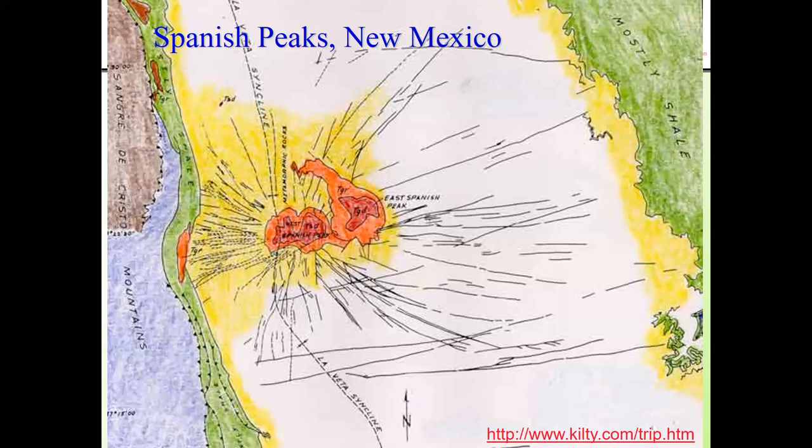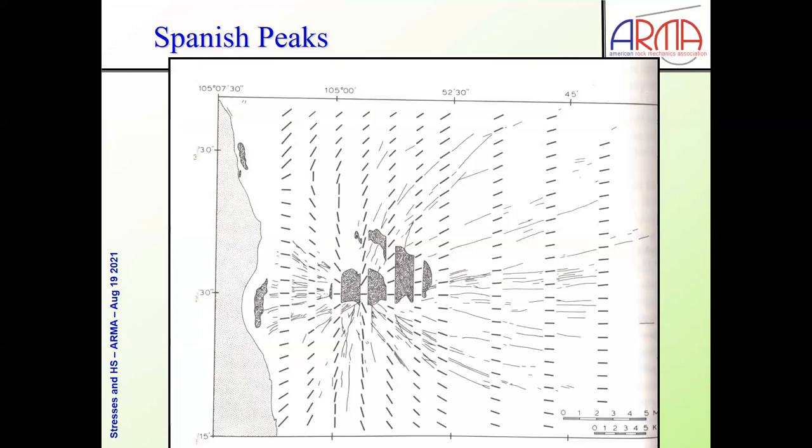The deep fractures were vertical. The shallow fractures were horizontal, or sills. And this diagram is 80 years old. It shows that just a simple linear elastic stress analysis — those are the little short bars — where it is possible to very closely match the orientation of the vertical dikes measured in the ground. So nature has lessons for us in many ways with hydraulic fracturing.